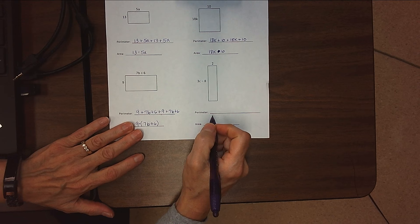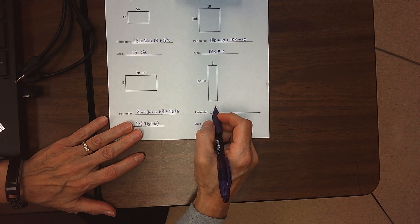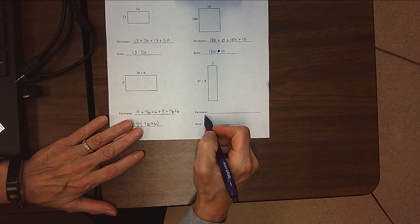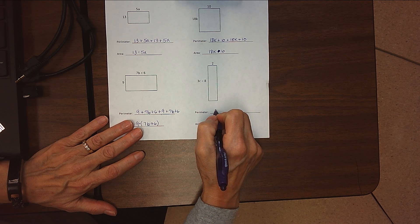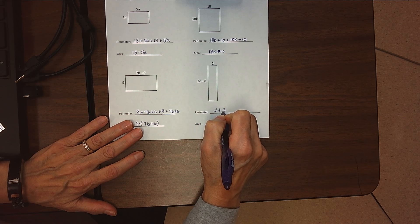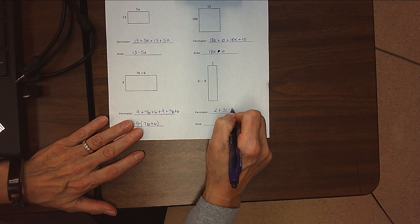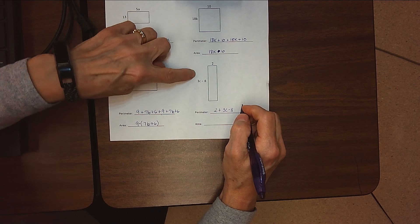Okay, I hope that went well for you. Let's check it out and see how you did. To write the perimeter for this rectangle, first we'll do 2 plus 3c minus 8. That took care of these two sides.